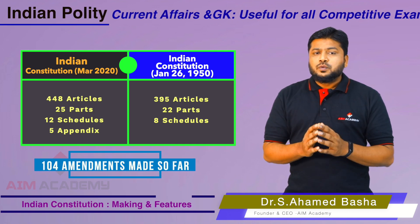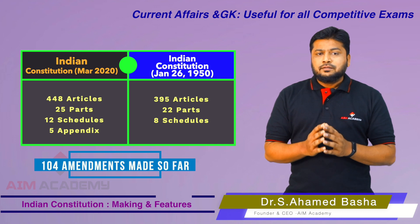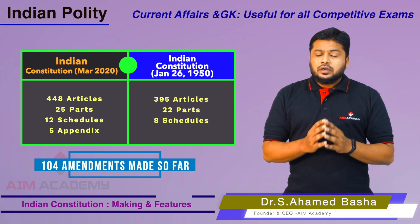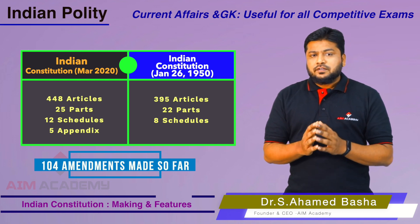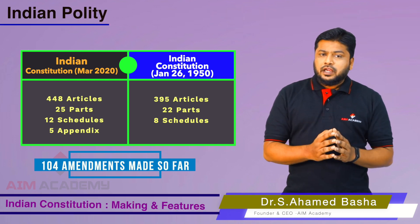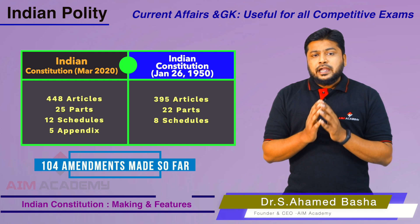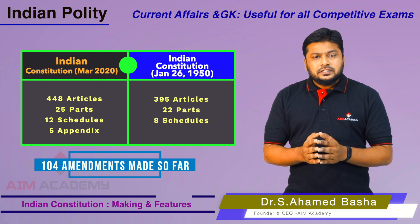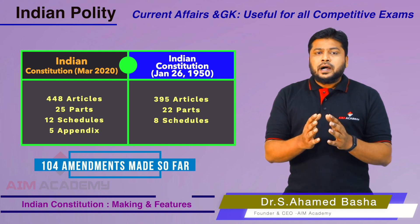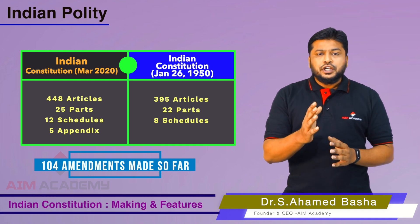When the constitution was legally enforced on 26th January 1950, it originally had 395 articles, 22 parts, and 8 schedules.